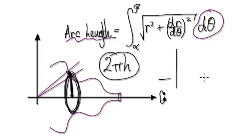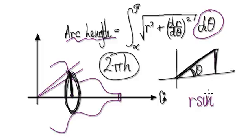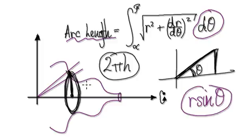Remember, in polar coordinates, we always get given the length r and the angle θ. So if you want to know this height here, it will be r sine theta. So this height here is really r sine theta.